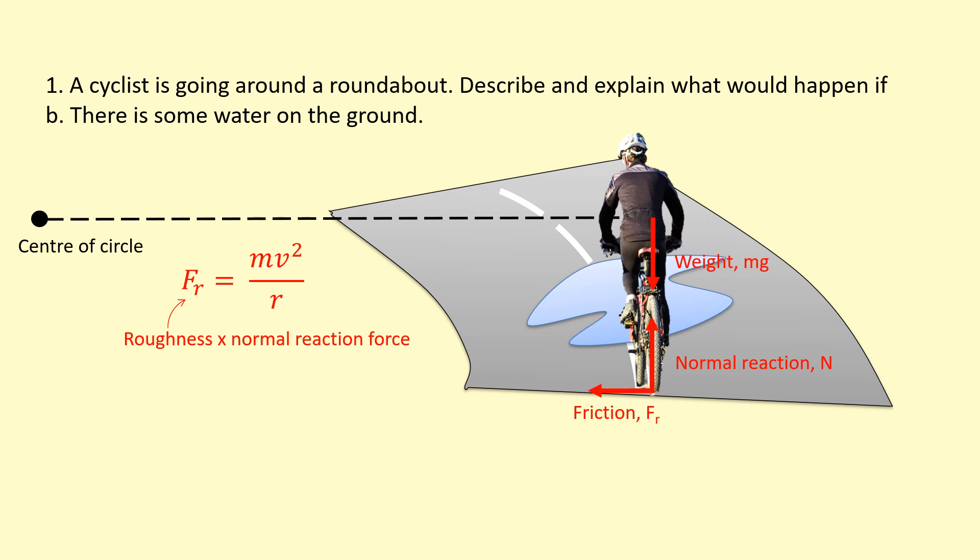So if there's water, the surface can be thought of as being less rough. So the friction is going to reduce. If the friction reduces, the centripetal force here is going to get smaller. That means if for the same mass of the cyclist and same velocity, he's going at the same speed, then the radius must increase.